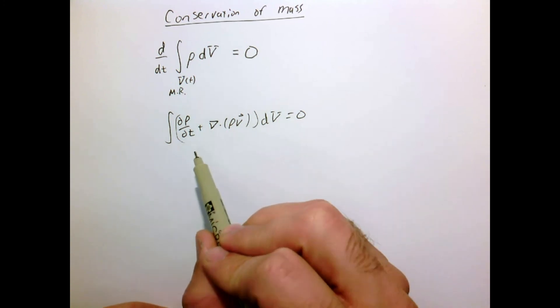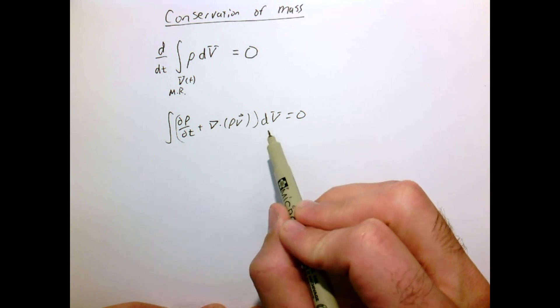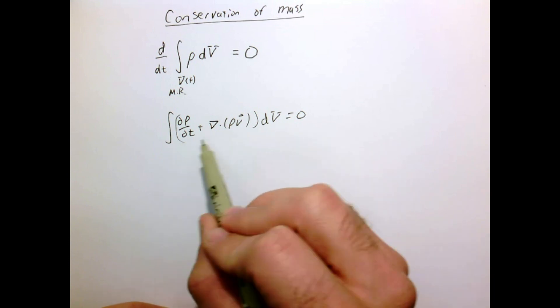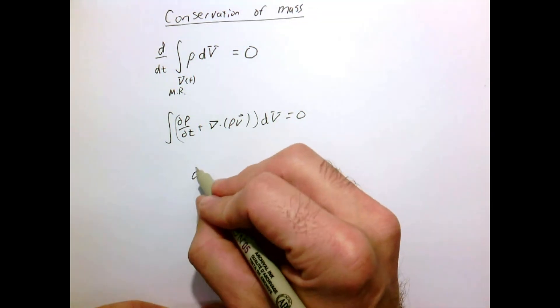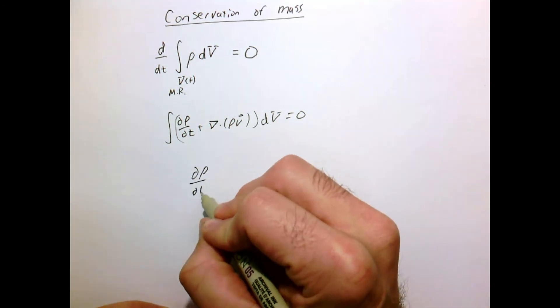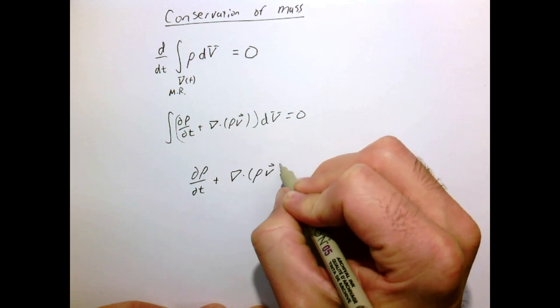And again since this was over an arbitrary region, if we're integrating something and we get zero over an arbitrary region, the only solution can be that this thing itself, the thing in parentheses, must be zero. And the thing in parentheses is our point-wise equation for the conservation of mass.